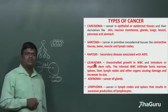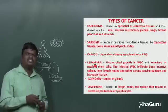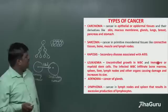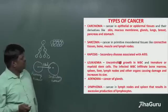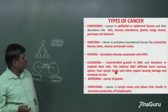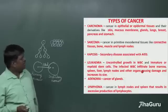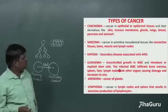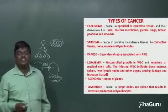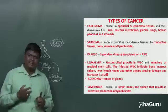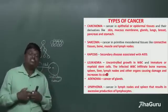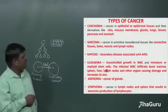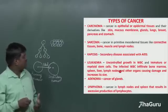Leukemia is uncontrolled growth in WBCs. WBC cells play an important role in the defense mechanism. Because of this uncontrolled WBC growth, the WBCs infiltrate and enter into the bone marrow cells, spleen, liver, and lymph nodes, causing an increase in their size — splenomegaly (enlargement of spleen), hepatomegaly (enlargement of liver), and enlargement of lymph nodes and other organs.